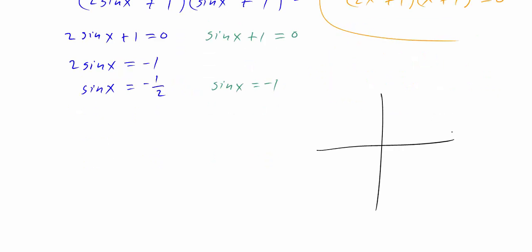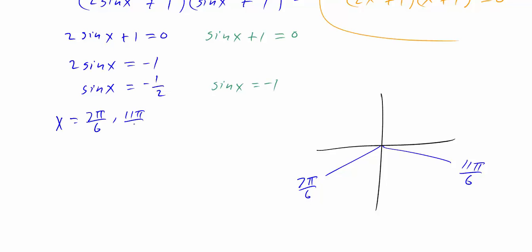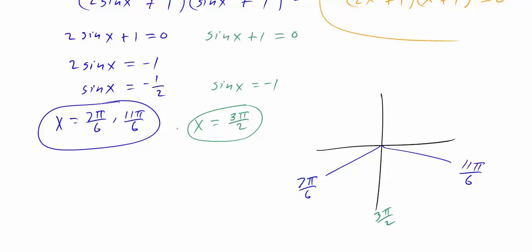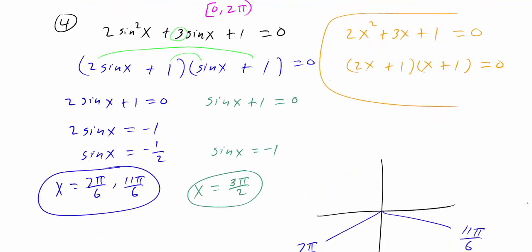Looking at the unit circle: where is the y value a negative one-half? That occurs at 7 pi over 6 and 11 pi over 6. So x equals 7 pi over 6 or 11 pi over 6. Where is the sine a negative one — where is y equal to negative one? That's at the bottom of the circle at 3 pi over 2. So on the interval zero to two pi we have three solutions. Hopefully you've learned a couple more techniques for solving trig equations.